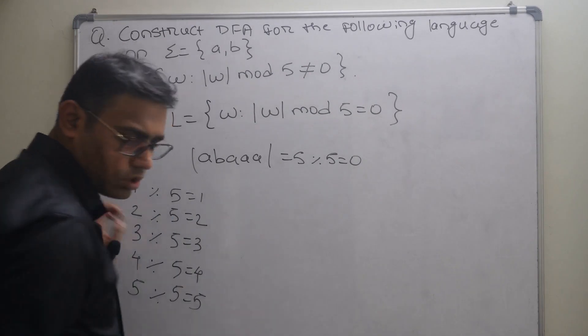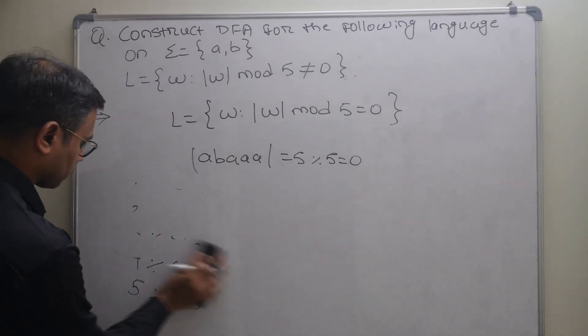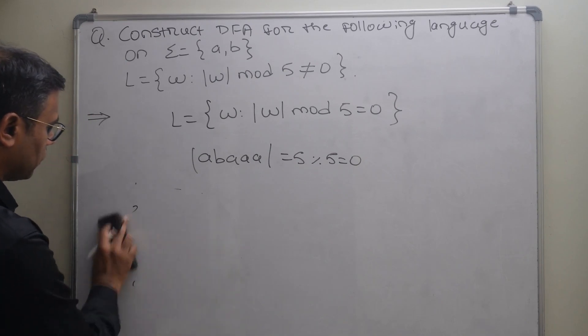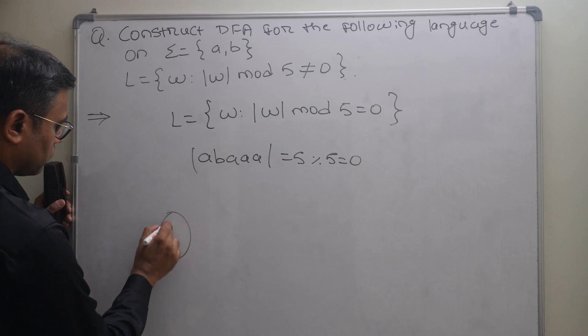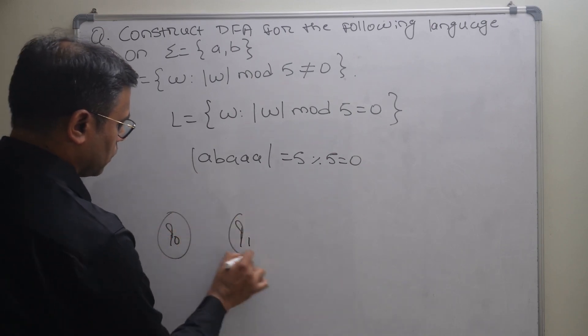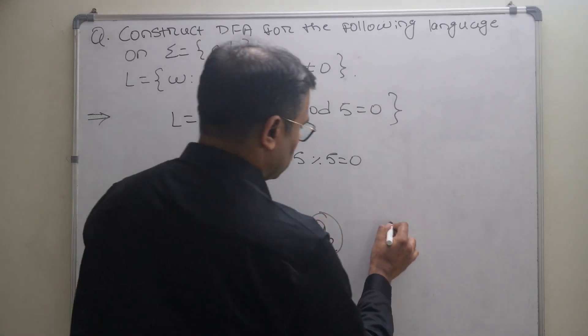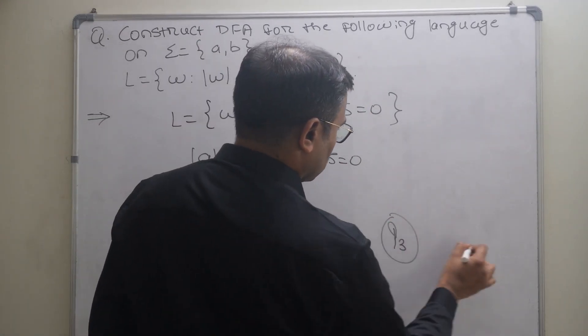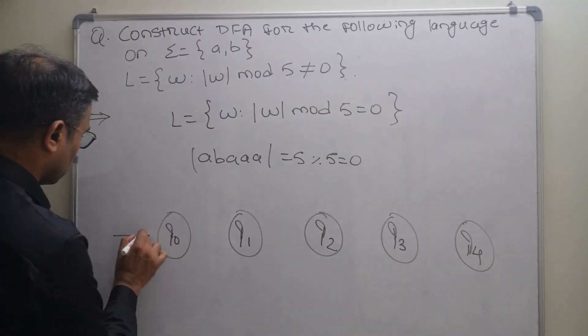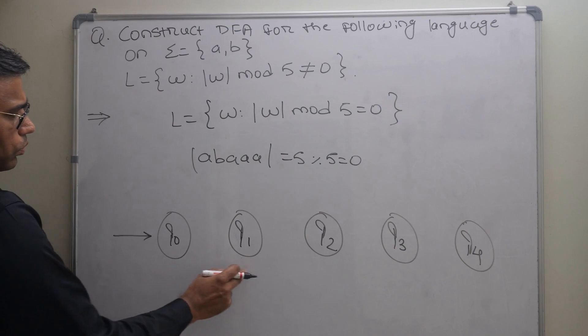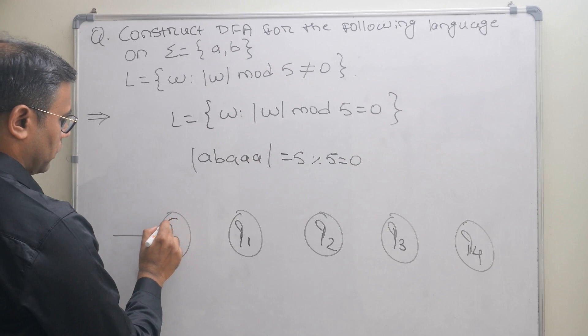I will draw the 5 states. The first state belongs to value 0, so this is q0, then q1, then q2, then q3, then q4. The first belongs to value 0, 1, 2, 3, 4. We want 0 here, so this will be the final state.